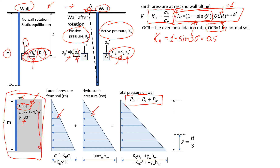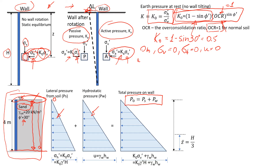Now we start with the top surface. At depth zero meters there is no soil above, so the vertical stress equals zero, the lateral stress equals zero, and the pore pressure equals zero. We mark this at the top of our triangle. We will now work through the full soil mass down to four meters, where the base of the wall is.